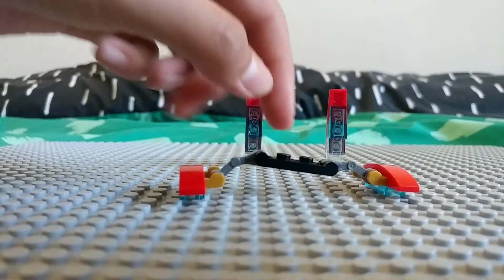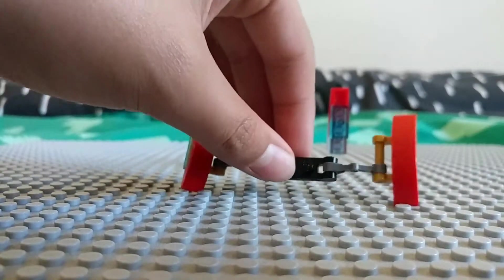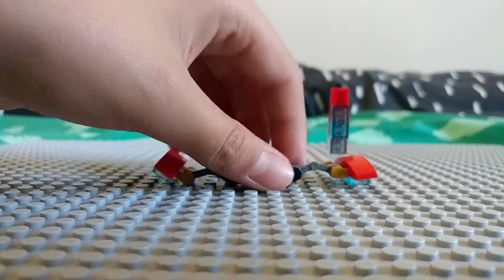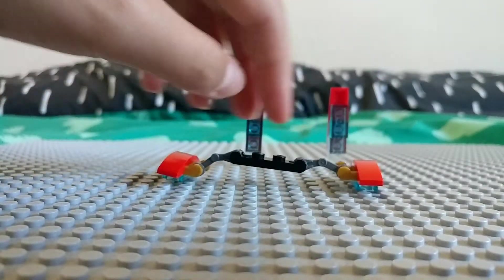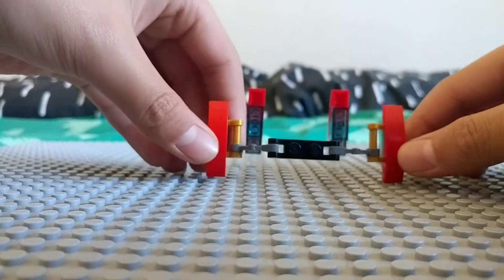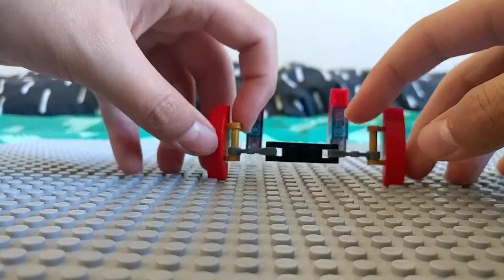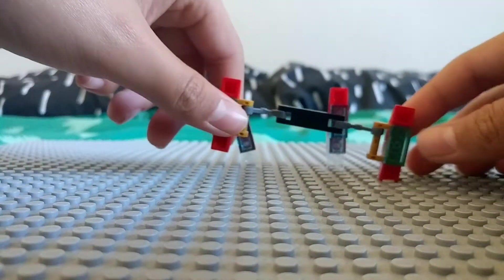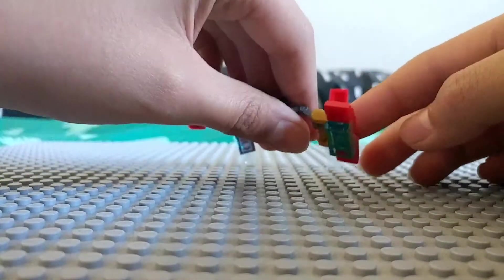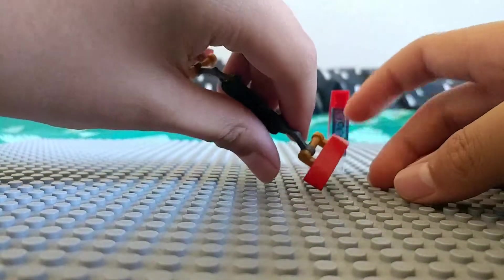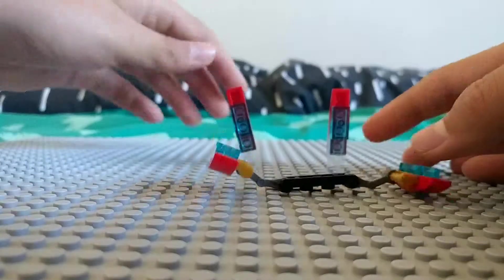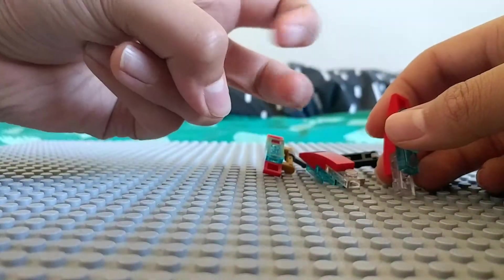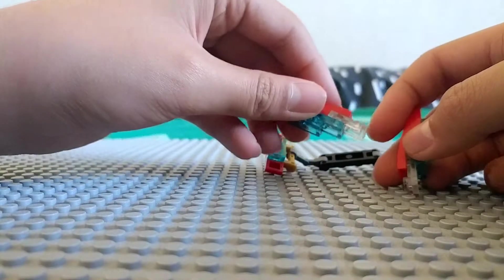So this is a one by two with two bar pieces on the end and these two droid arms here connected to these two bars, and then put these translucent blue one by twos on here. And then I don't have much burgundy so I just put normal red for these ones.